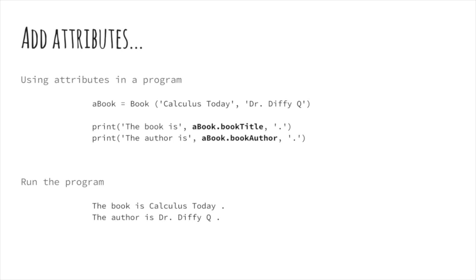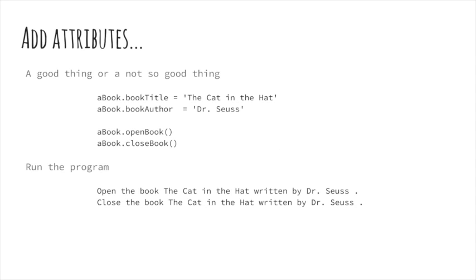The syntax is similar to creating an attribute, the difference being the object name is used instead of self. Here's how it would be done in the sample program: aBook is assigned the object from Book, and the instance variables are referenced on the print statements. The output when the program is run will be: The book is Calculus Today. The author is Dr. Diffie Q. One of the risks of allowing access to an object's attributes directly from the body of a program, and not through a method, is that Python will allow it to be changed.